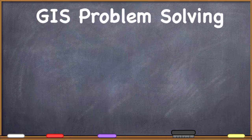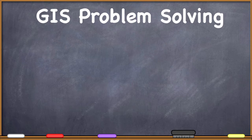Hello everybody and welcome to what may be the video lecture you've been waiting for. We've been talking about different tools in our core vector GIS toolkit, and I keep telling you that we're going to use these tools to solve problems and answer questions. Well, here we are. We're going to begin putting all of these tools together, and the key is chaining all of these procedures in the correct order to arrive at the solution we want.